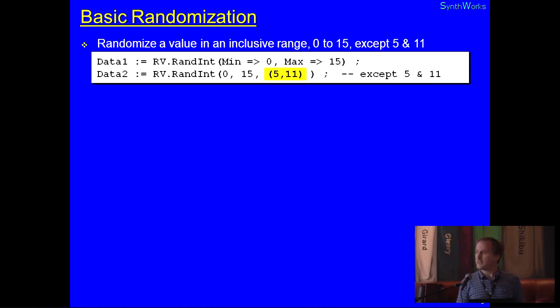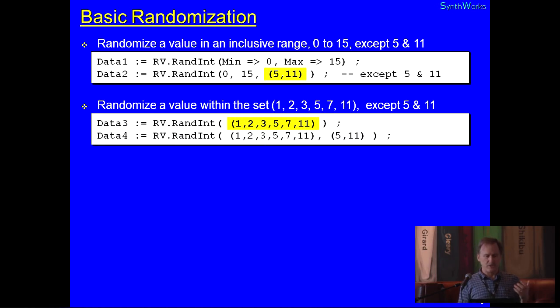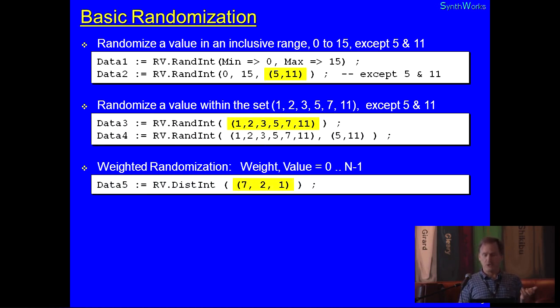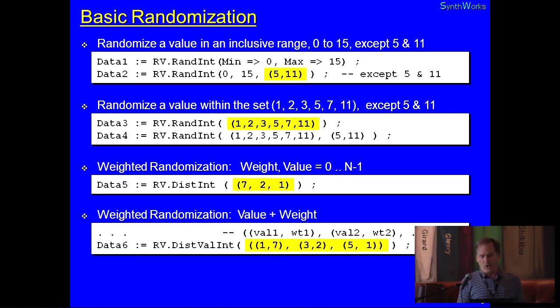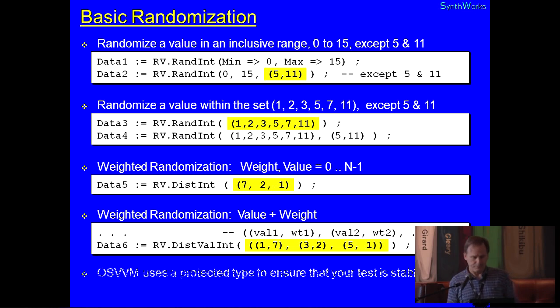So, we have a very basic randomization library. Randomize with a range, randomize with a range, with some excludes, do sets of numbers, do weighted distributions that return a predetermined set of values. It starts with zero and goes up to n minus one, where n is the number of values you have. Also, do a weighted randomization where I can specify the weight and the value I want it to return. But by itself, this is not constrained random. This is just a library.